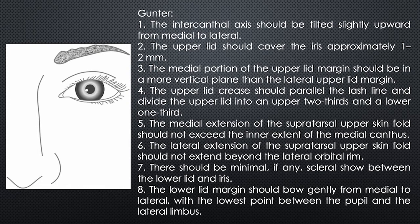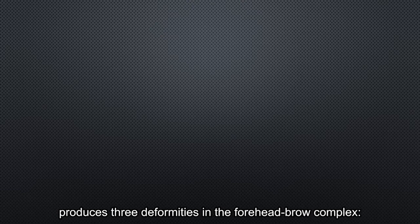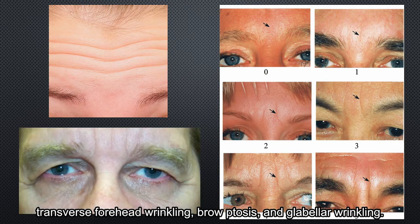There should be minimal, if any, scleral show between the lower lid and iris. The lower lid margin should bow slightly from medial to lateral, with the lowest spot between the pupil and the lateral limbus. However, prolonged hyperactivity of the upper facial musculature produces three deformities in the forehead-brow complex: transverse forehead wrinkling, brow ptosis, and glabellar wrinkling.